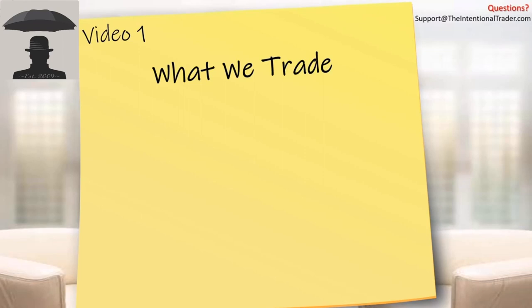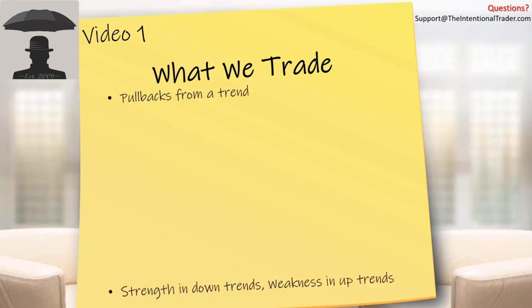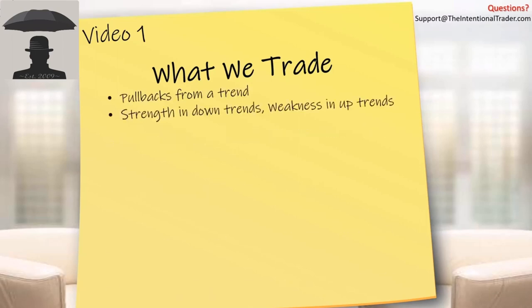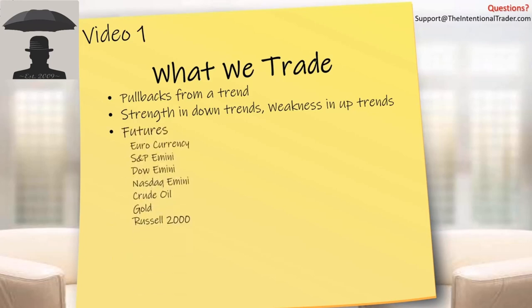Welcome to video one. This is what we trade — we trade pullbacks from a trend. It's that simple. We look for strength in downtrends and weakness in uptrends.